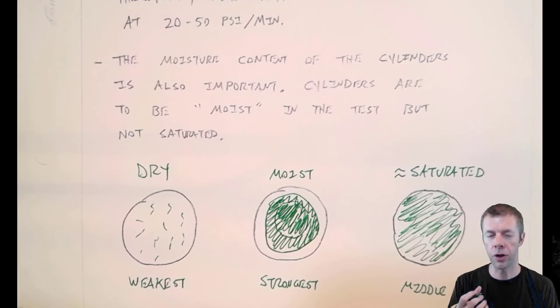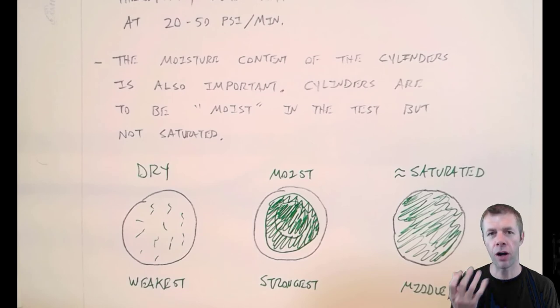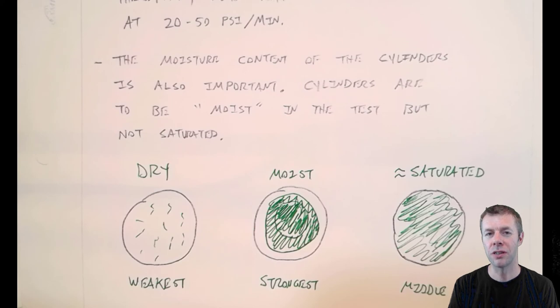And if I took a cylinder out of a water bath or a fog room, that's the place where it rains. And I just dried the outside of it. And I tested it. That's pretty simple. And that's pretty consistent. And that's exactly what we want in this test.